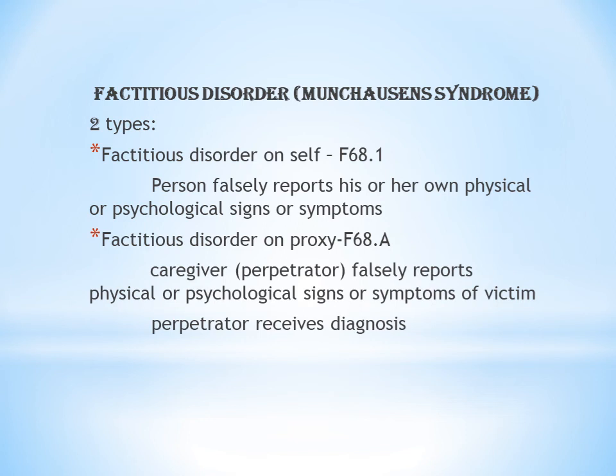The code for factitious disorder on self is F68.1. The speaker also explains in the local language: the patient falsely fabricates their own physical or psychological signs and symptoms. Factitious disorder on proxy involves a second person — someone else fabricating symptoms for another individual.